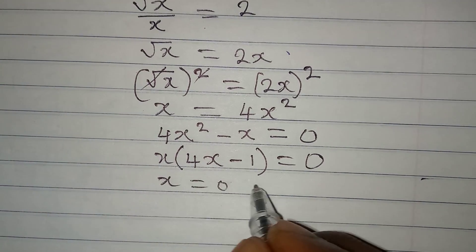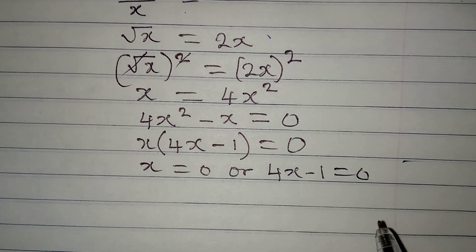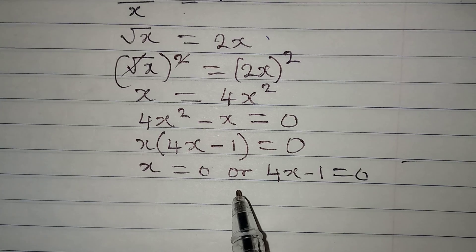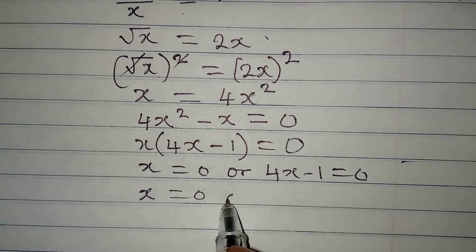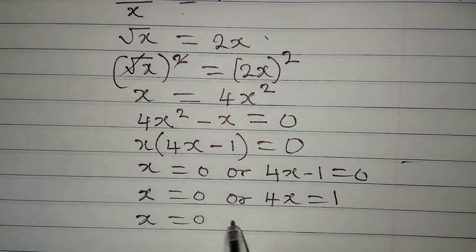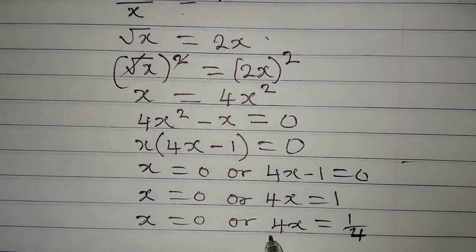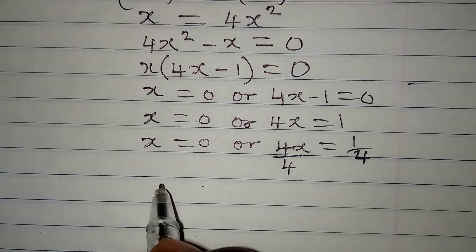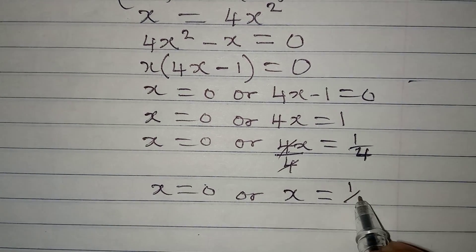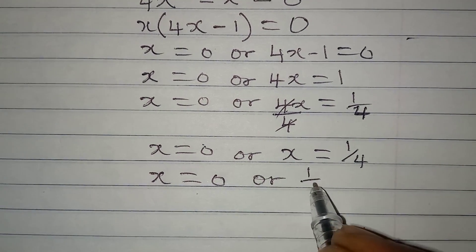So x is equal to 0, or 4x minus 1 is equal to 0. Every time you multiply two things to get 0, it is either one of them is equal to 0 or both are equal to 0. So x here is equal to 0, or from this side 4x will be equal to 1, and x is equal to 1 over 4. The two solutions are x equals 0 or 1 over 4.